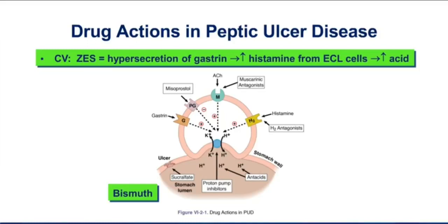If you're going to choose between a histamine H2 blocker and a proton pump inhibitor for Zollinger-Ellison, it's pretty clear the proton pump inhibitor is the better choice. You should see clearly why blocking the proton pump directly is going to block both of those pathways.